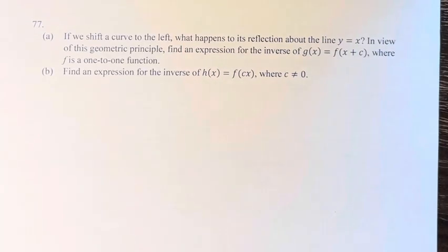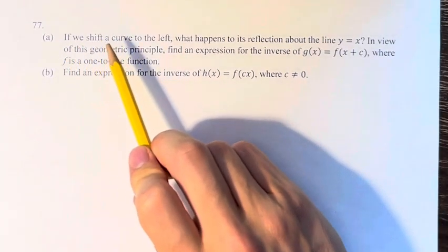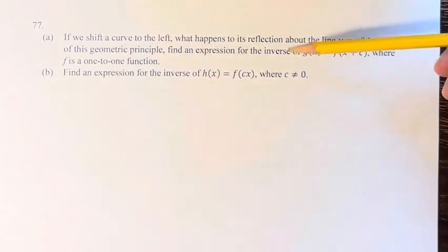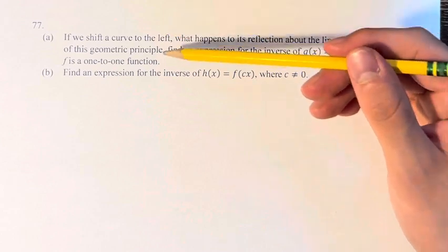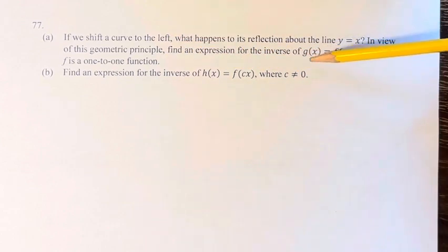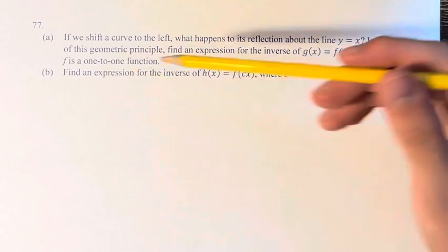Hello, and welcome back to another video. In this problem, we're asked if we shift a curve to the left, what happens to its reflection about the line y equals x? In view of this geometric principle, find an expression for the inverse of g of x equals f of x plus c, where f is a one-to-one function.